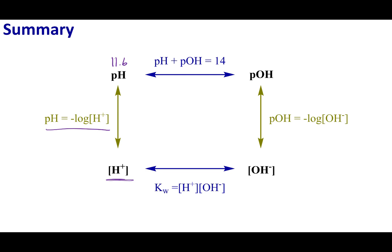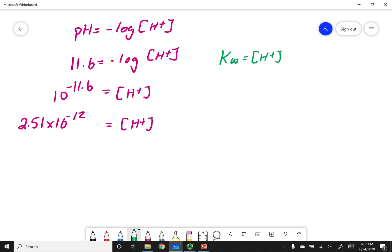From there, we can get our OH minus concentration. To do that, we're going to use this relationship. KW equals the H plus concentration times our OH minus concentration. Or in other words, my OH minus concentration equals KW over our H plus concentration. We know that KW is 1 times 10 to the negative 14th, and our H plus concentration is 2.51 times 10 to the negative 12th. What this gets us is a value of 0.040 molar.